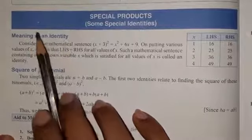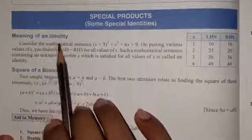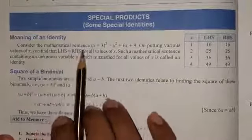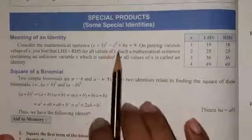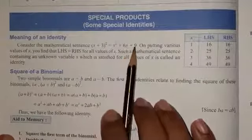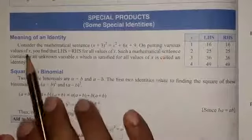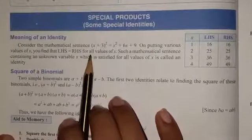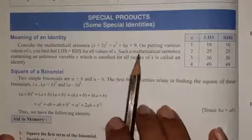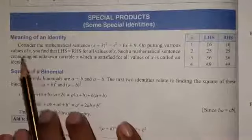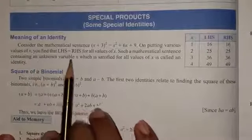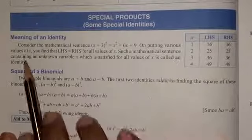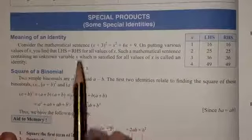Meaning of an identity — consider the mathematical sentence: x plus 3, whole square, is equal to x square plus 6x plus 9. On putting various values of x, you find that the left-hand side is equal to the right-hand side for all values of x. Such a mathematical sentence containing an unknown variable x which is satisfied for all values of x is called an identity.